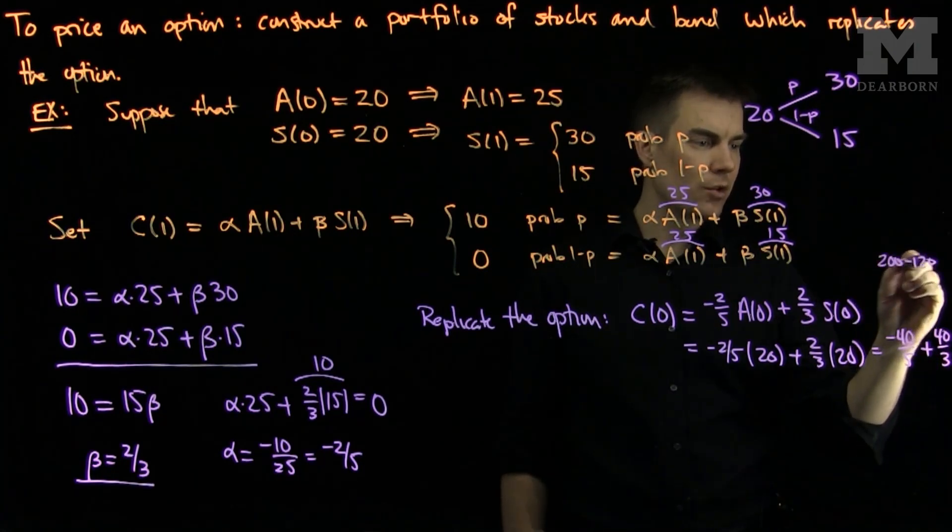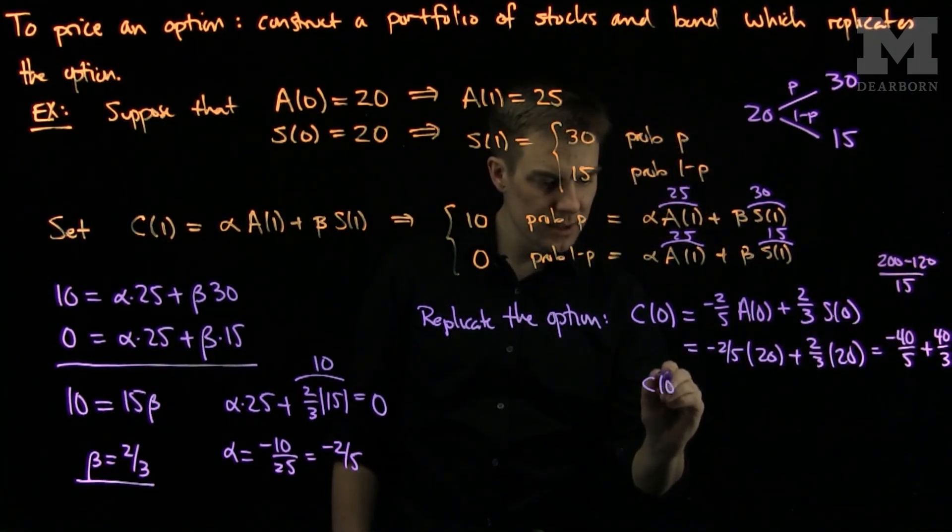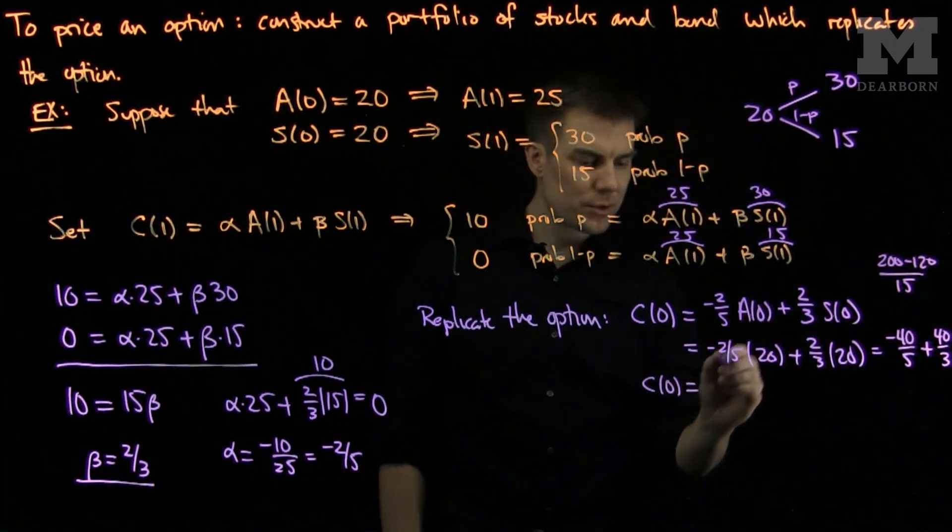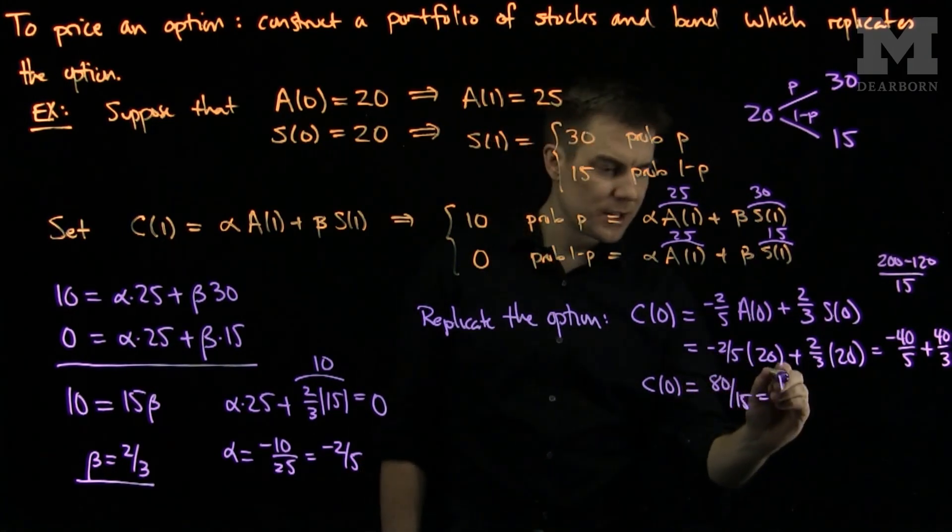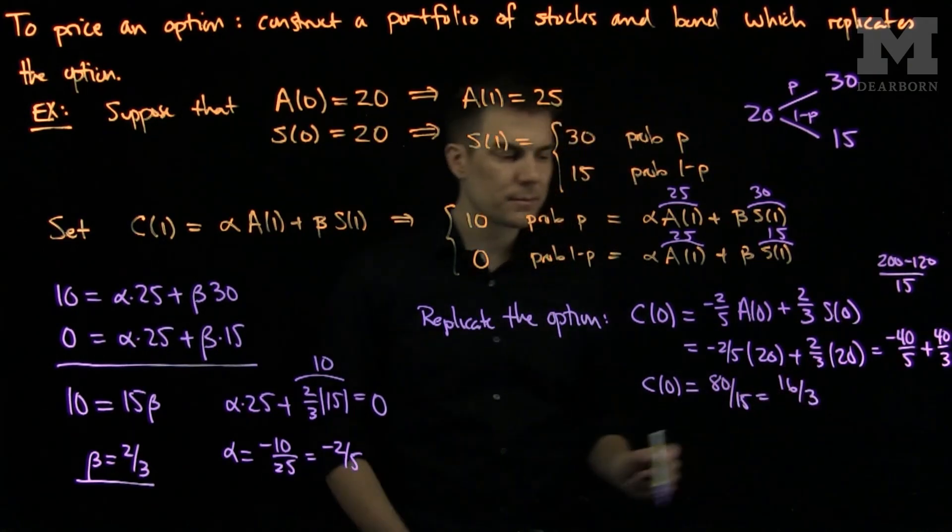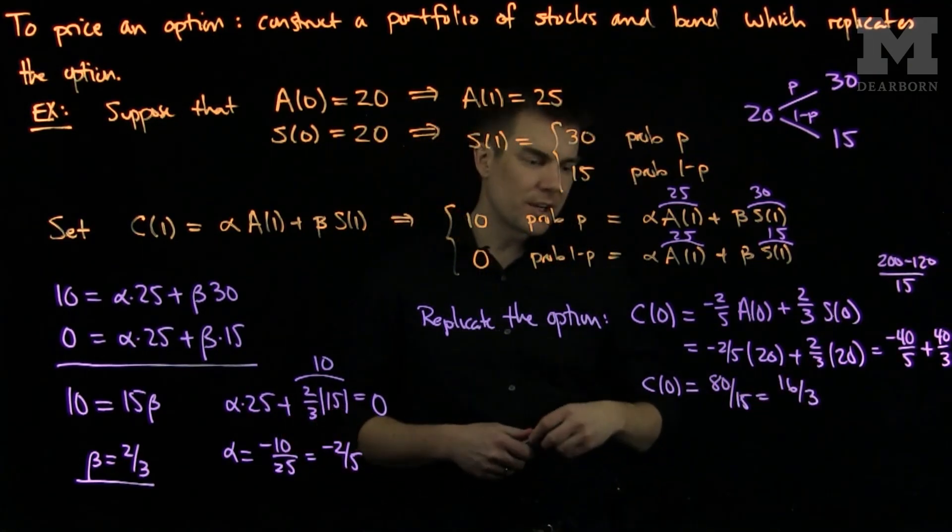So 200 minus 120 over 15. So that tells me that C(0) will be equal to 80 over 15. And 80 over 15 is 16 over 3. So this tells me that the price of the option should be 16/3.